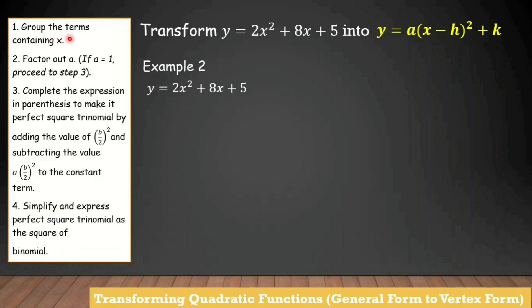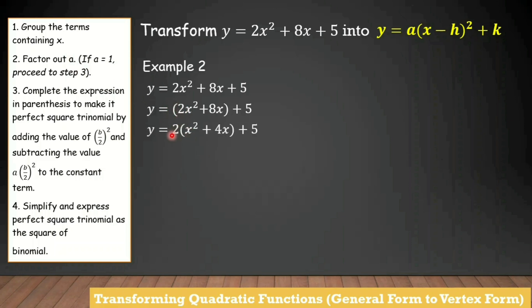Let's follow the steps. Step 1: group the terms containing x. The terms with x are grouped together. Step 2: factor out a. Since a is not 1 here, we perform step 2 — we factor out a from the parentheses. We divide each term inside the parentheses by a: 2x squared divided by 2 equals x squared, and 8x divided by 2 equals 4x. Then bring down the constant term 5.